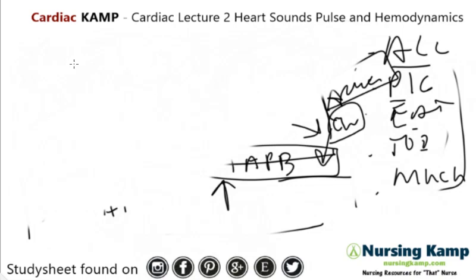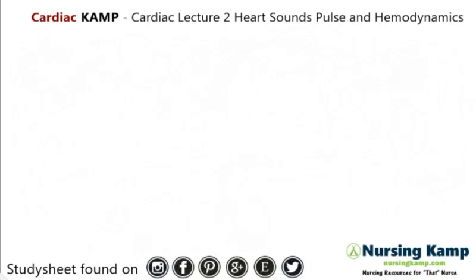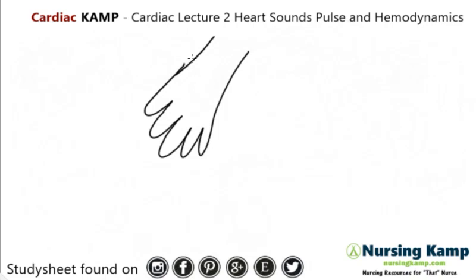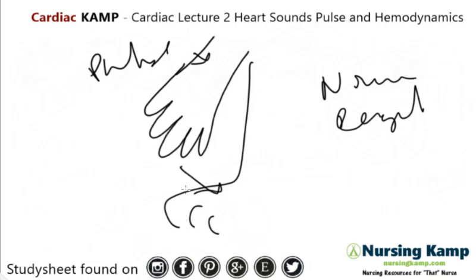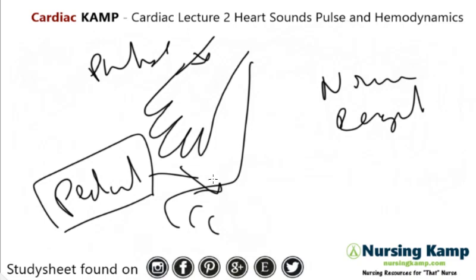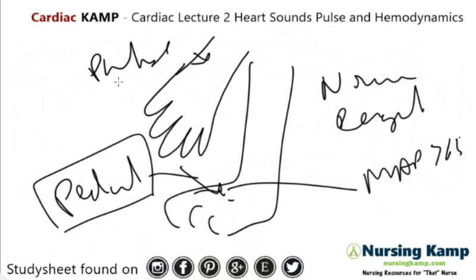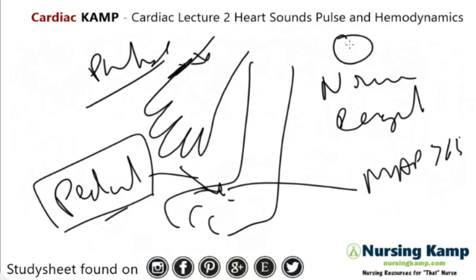So we've covered heart sounds S1 and S2 as normal findings. Now let's talk about pulses, also normal findings. Pulses are always peripheral pulse and should be normal and regular. If you can feel pedal pulses on a normal pulse, the mean arterial pressure is greater than 65, which is a good sign. On NCLEX, radial and pedal pulses are all about perfusion and whether a procedure was involved — absent pulses after a procedure is acute.